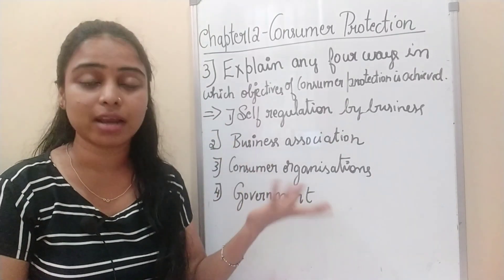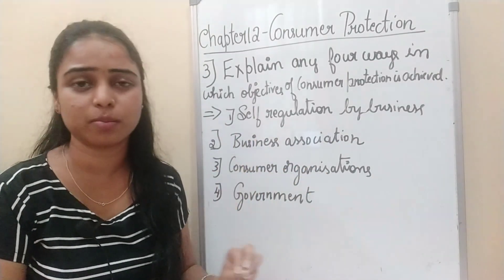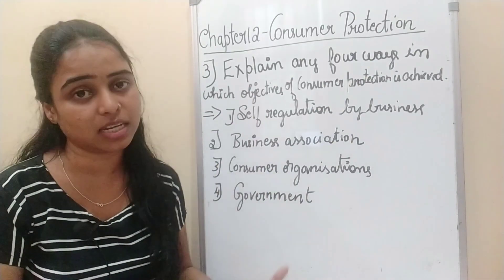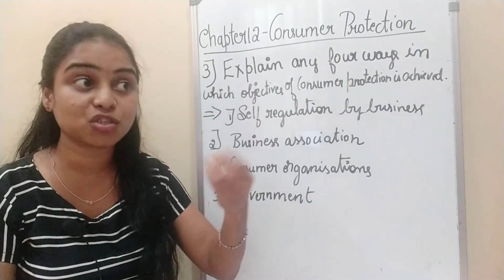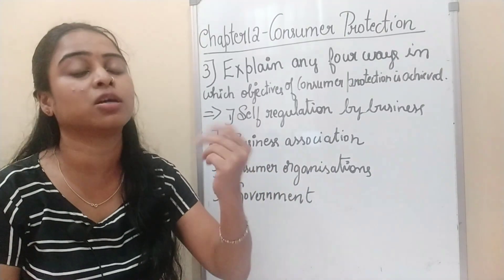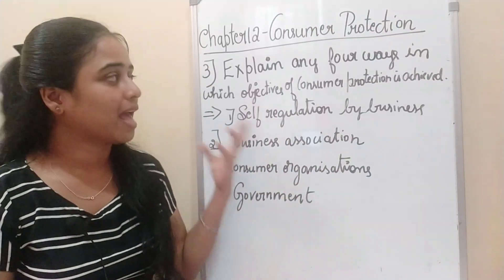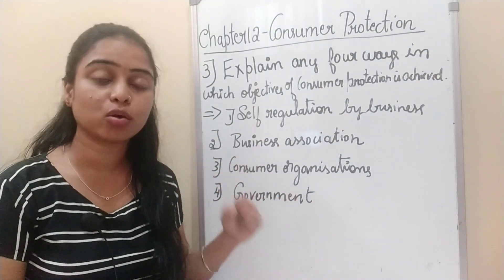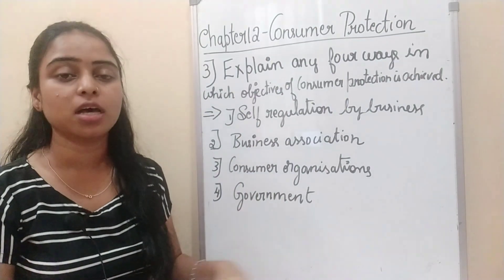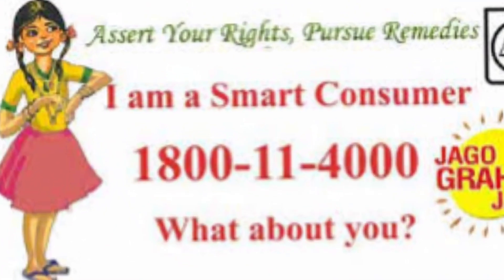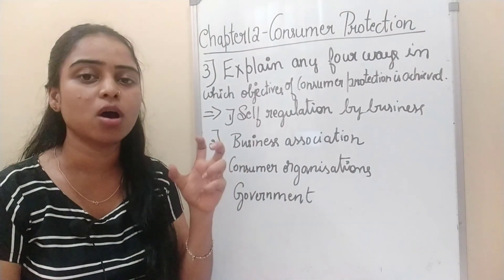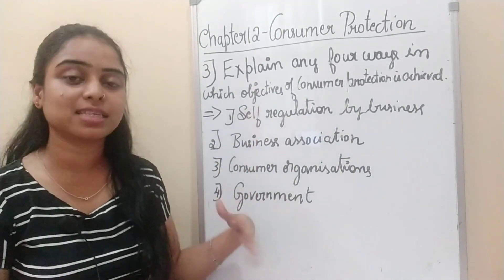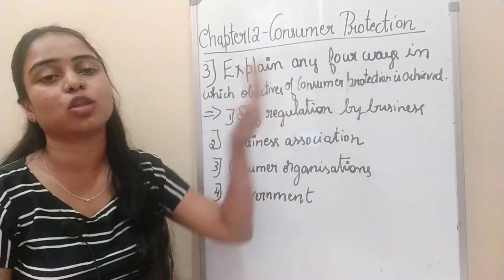The third method is consumer organizations. There is a lot of advertisement you might have seen to achieve the objective of consumer protection. There is also a consumer helpline number — a toll-free number — which I am displaying here. You can always call and complain. This is how the government is also helping in achieving the objective of consumer protection.